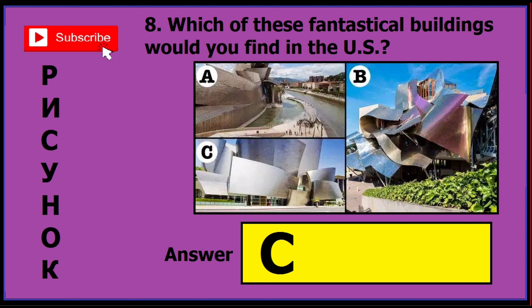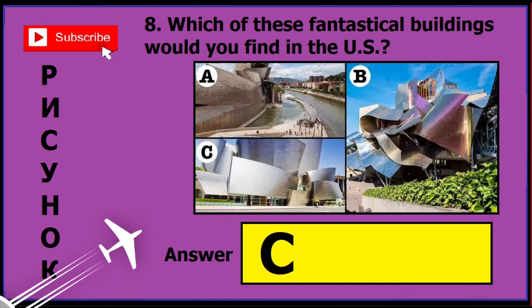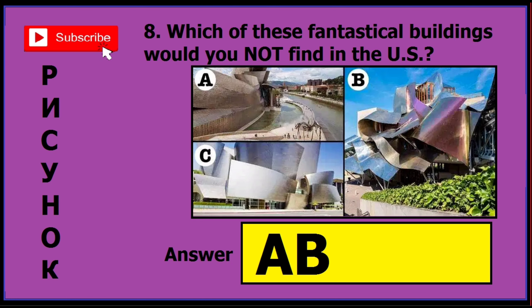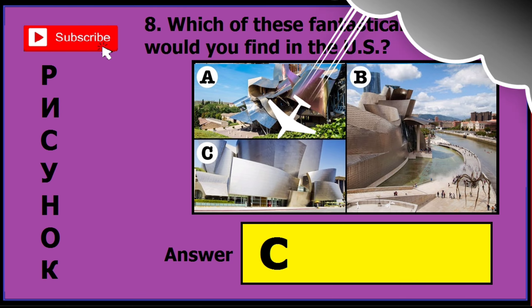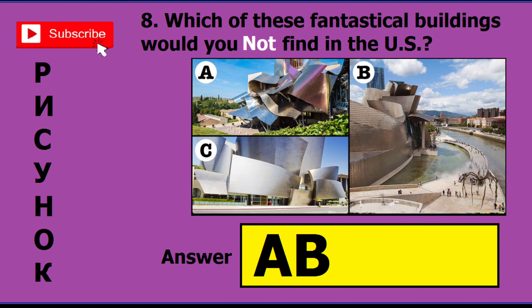In version three of this question, if you find this sort of image and question, the correct answer is C. In version four, it asks 'which of these fantastical buildings will you not find?' and the correct answer is AB. In version five, the correct answer is C but the images are in different positions, so this is a different version — read the question carefully. In version six, the question is different but the image is the same, and the correct answer is AB.